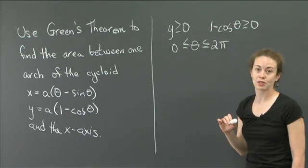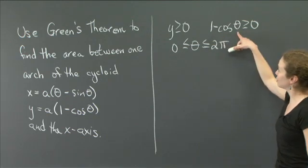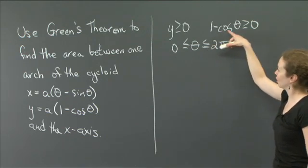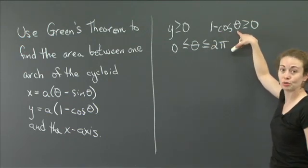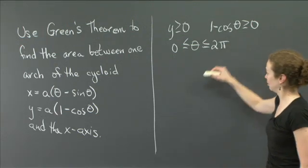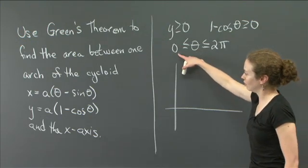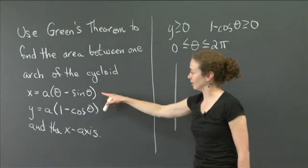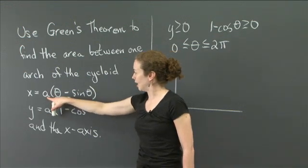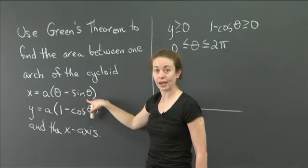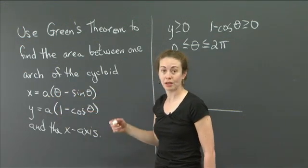These are good parameters because this statement is always true, and I get 0 when θ = 0 and θ = 2π. Let θ run between 0 and 2π. Now let's think about the picture. When θ = 0, x = a(0 - 0) = 0 and y = 0.